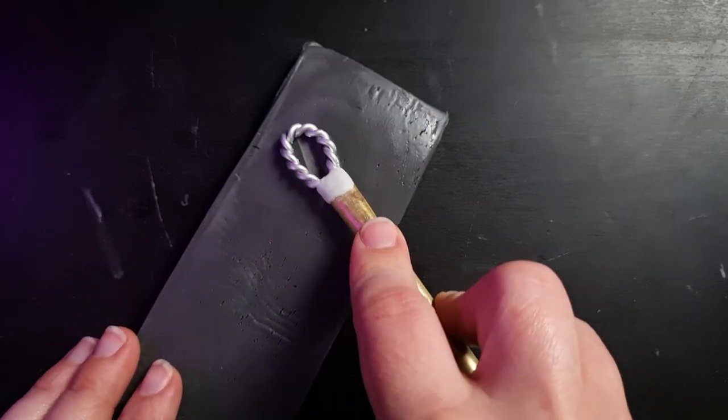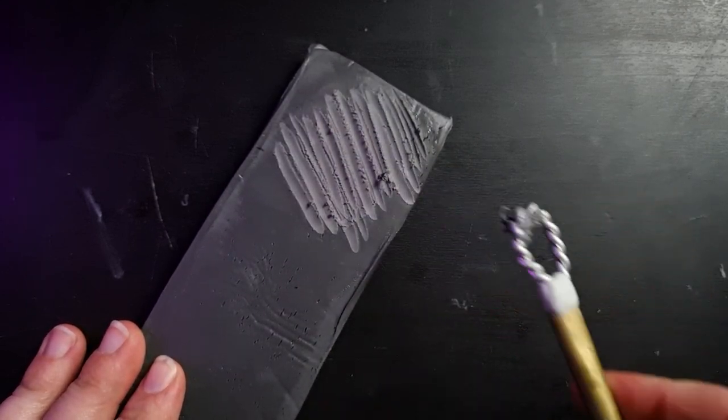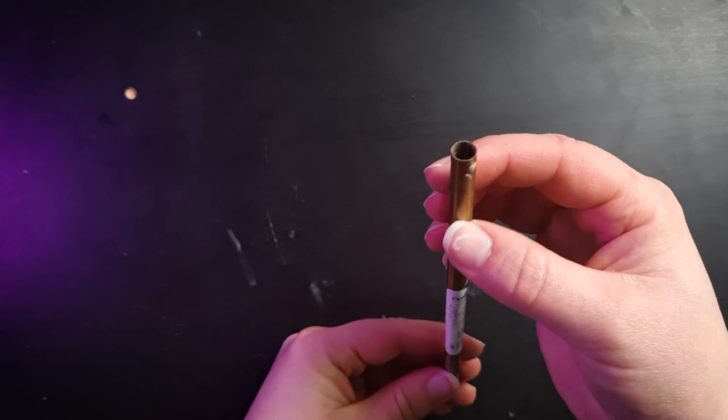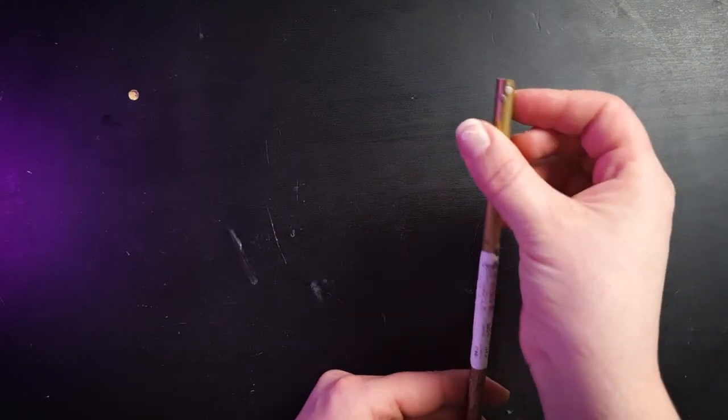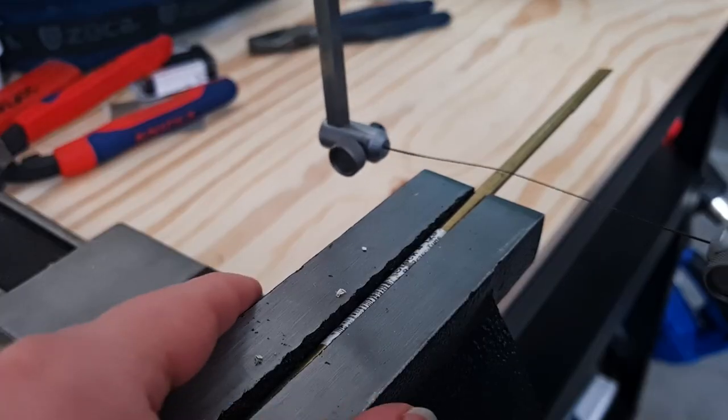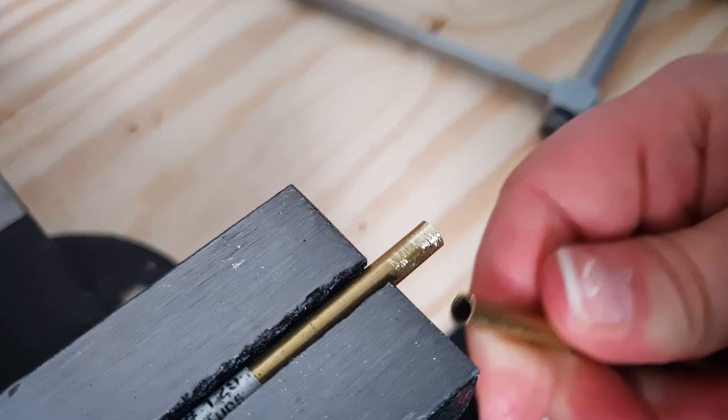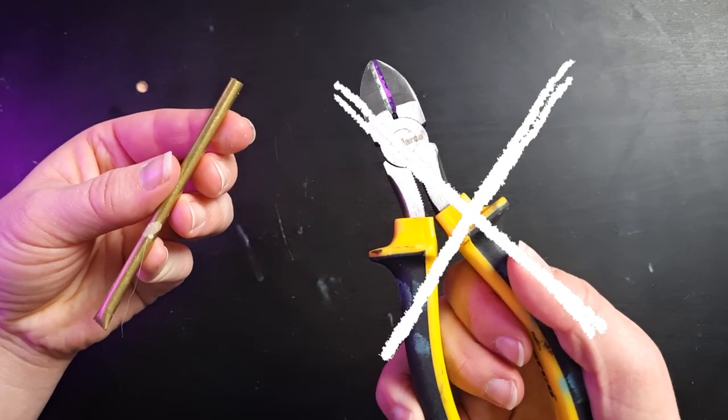The first tool we'll make is the loop tool. This is great for removing clay and for gradually smoothing your surfaces. The body of the tool will be made from brass tubing. The brand is K&S and it's about five dollars per pack. I use a small hacksaw to cut it to the length I want. Make sure you don't use side cutters for this as they will bend the tube out of shape.